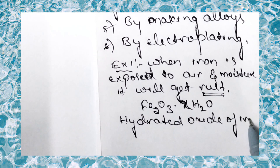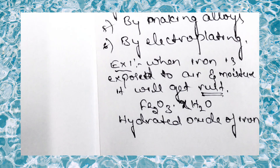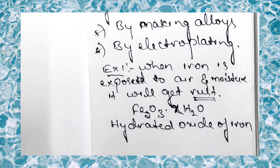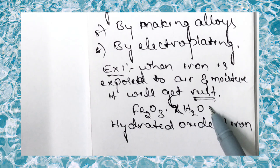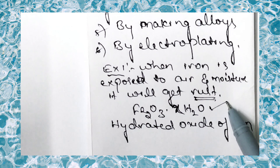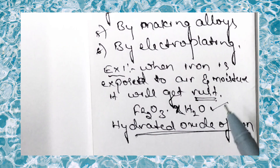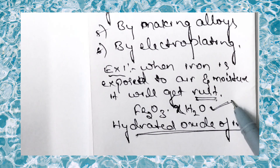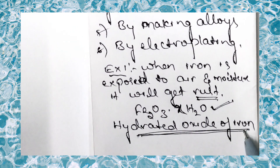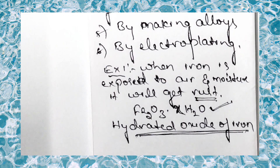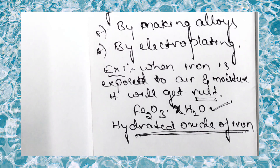The chemical name for rust is hydrated oxide of iron, with formula Fe₂O₃·xH₂O. Note that iron will only rust if it reacts with both air and water together.